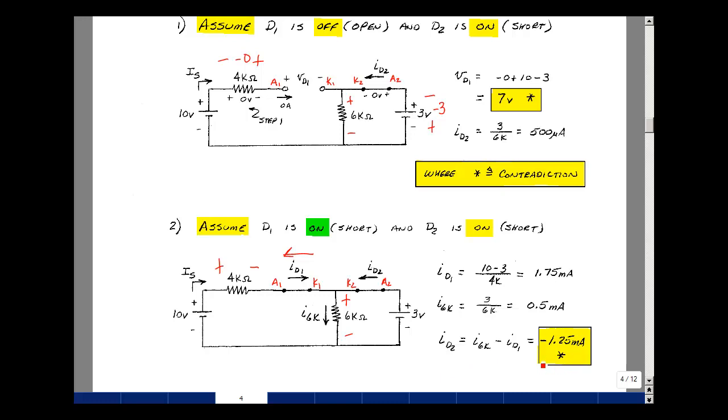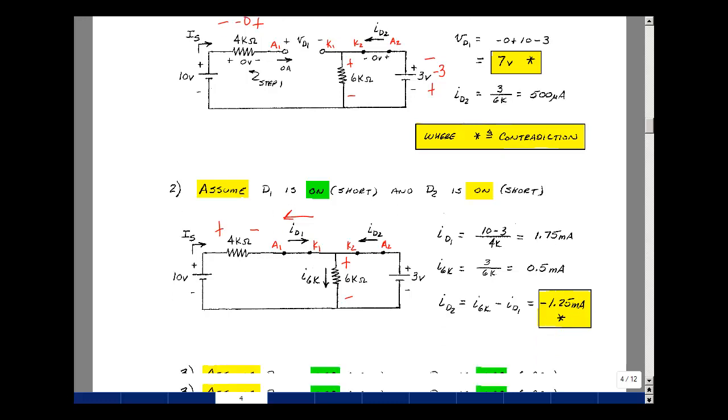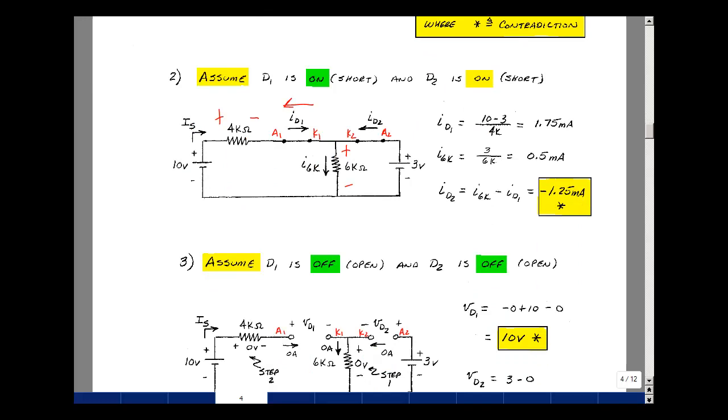That turns out to be a minus 1.25 milliamps, and that's a contradiction because current has to be greater than or equal to zero. If they're both on don't work, let's try both off. And again, we did all the algebra correctly, but we got the wrong answer.